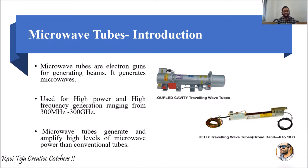To avoid these problems, the concept of microwave tubes was developed. Microwave tubes are far better than conventional tubes, designed to generate higher power with higher microwave frequencies. Microwave tubes are essentially electron guns which generate beams — these beams are our microwaves.